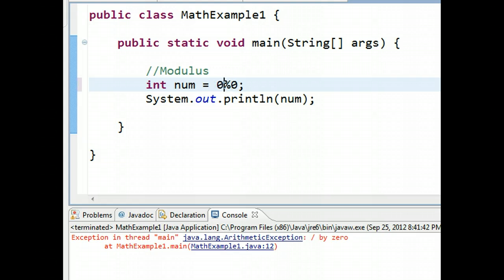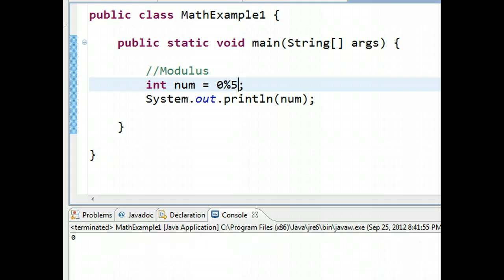So, now, what about 0 mod 5 if I execute this? That's going to give me 0. Let's look at why that is.